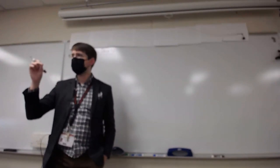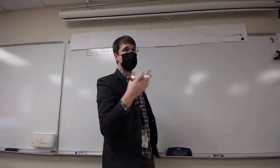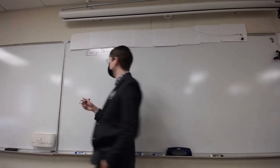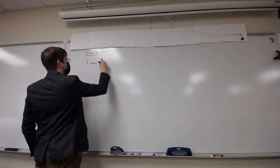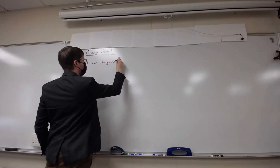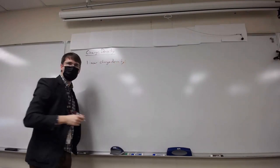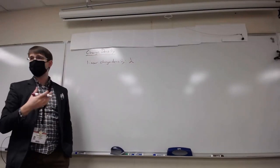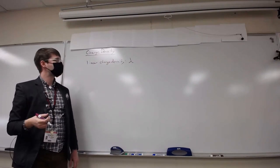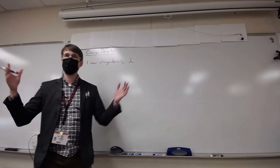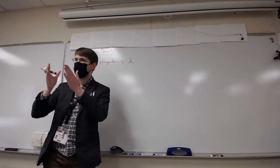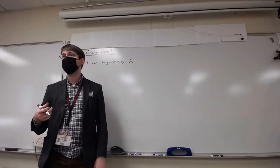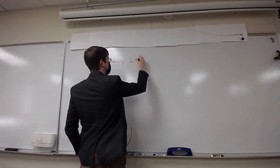Rather than having all of the charge focused at single points, we're taking a calculus approach — looking at an infinite number of tiny point charges spaced out along a line. This is a linear charge density. We use the symbol lowercase Greek letter lambda — conveniently the Greek letter L for linear. Lambda tells us the amount of charge per length, and in calculus terms we write it as dq/dx.